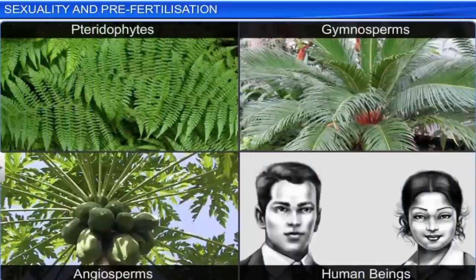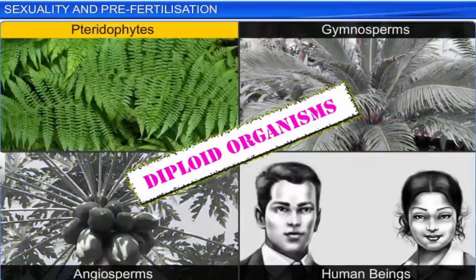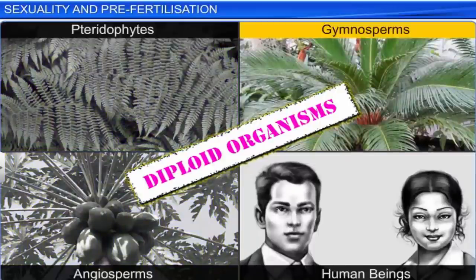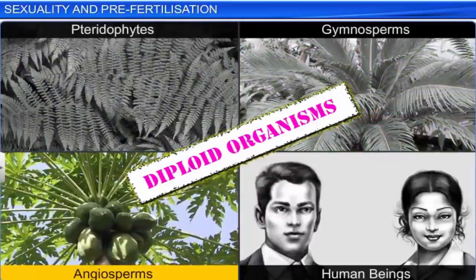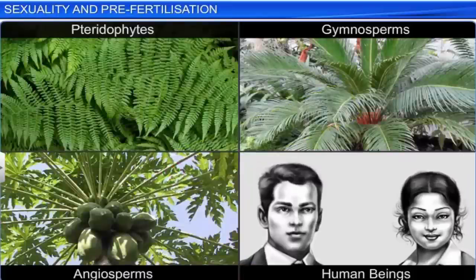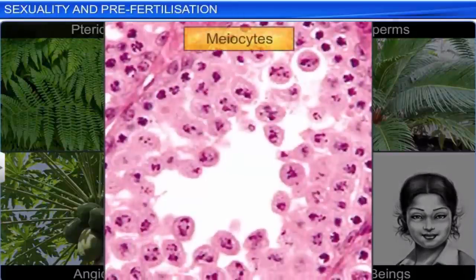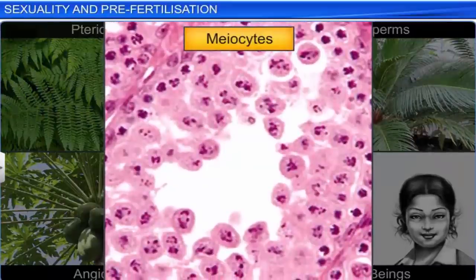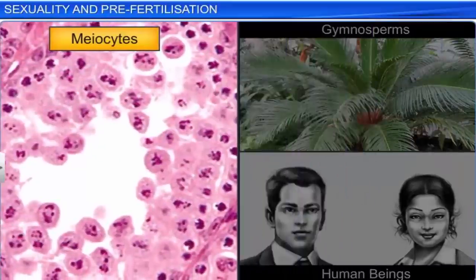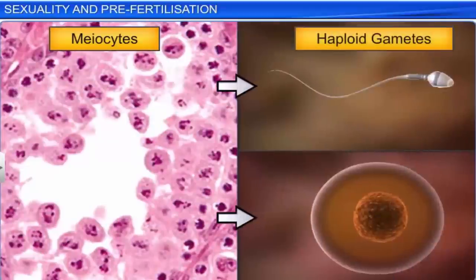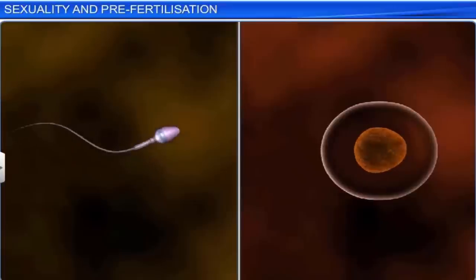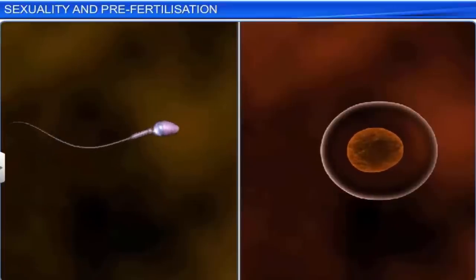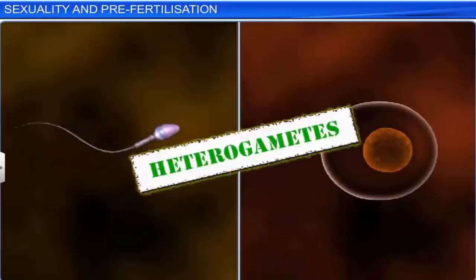However, diploid organisms such as pteridophytes, gymnosperms, angiosperms, as well as most animals including human beings, possess specialized gamete mother cells called meiocytes that undergo meiosis, or reduction division, forming haploid gametes. These haploid gametes are not morphologically similar and are therefore called heterogametes.